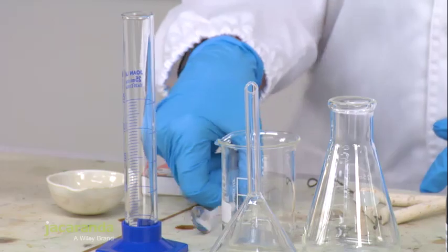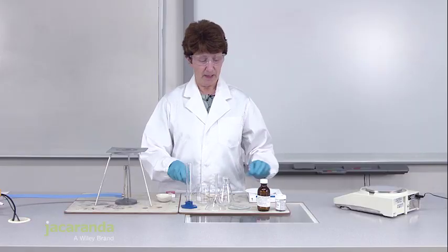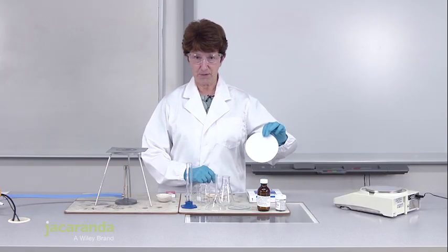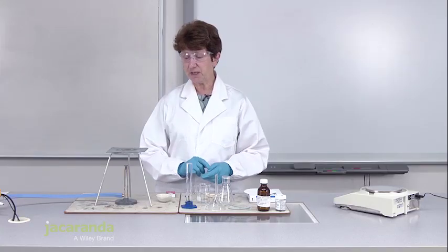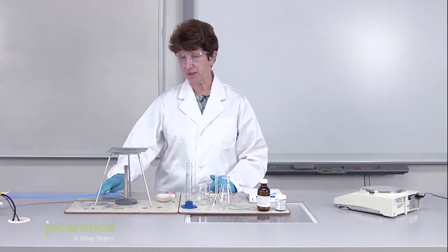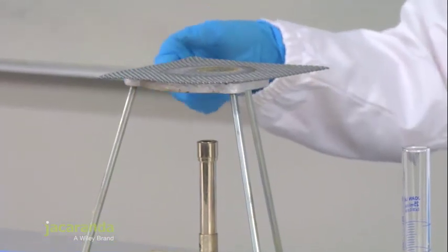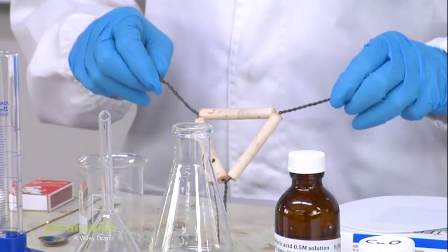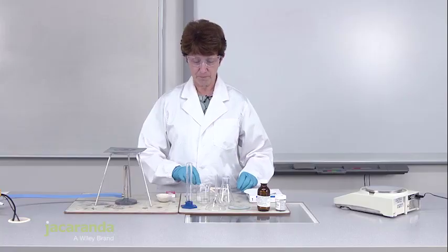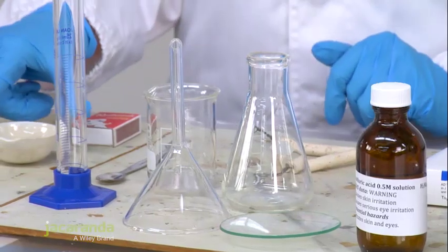We use a spatula to measure out copper oxide and a filter paper is needed for the filtering procedure. For the two stages of heating we need to have a tripod and a Bunsen. For the first stage we're going to use a wire gauze. For the second stage we're going to use a pipe clay triangle. We also have an evaporating dish.